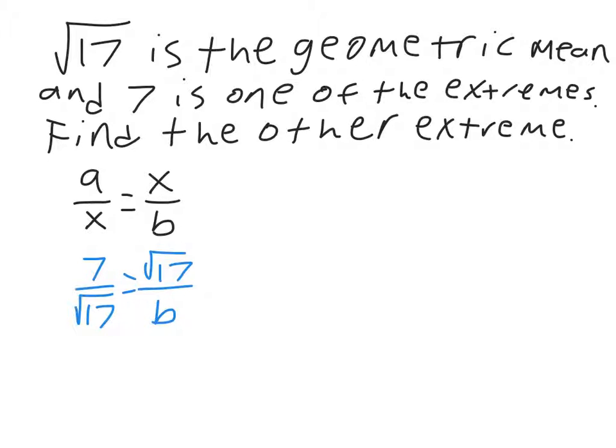So, cross-multiply, 7 times B is 7B, and square root of 17 times square root of 17 is 17. The square roots cancel each other out when they multiply. Now, divide both sides by 7, and that will give you B equals 17 over 7. So, the second extreme is 17 over 7, which, if you want to turn into a decimal, would be 8.5.